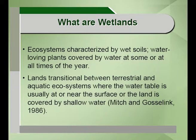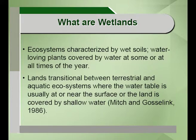These ecosystems are characterized by wet soils and water loving plants, also called hydrophytes as they love water. The wetlands are covered by water at some or at all times of the year. The water can be seasonal, intermittent, episodic or permanent depending upon the amount of water present in these wetland ecosystems.